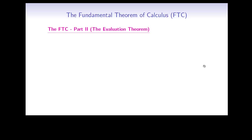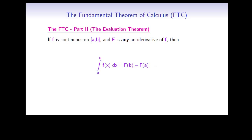The second part of the fundamental theorem of calculus says that if f is a continuous function on the closed interval [a, b], and F is any antiderivative of f, then the integral from a to b of f(x) dx is equal to F(b) minus F(a). In other words, to compute a definite integral, it is enough to find one antiderivative of f, compute it at the endpoints a and b, and then take the difference.